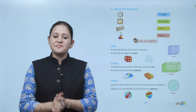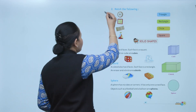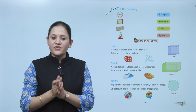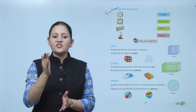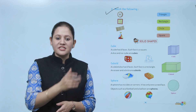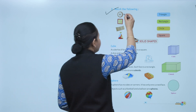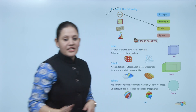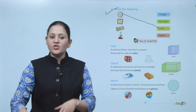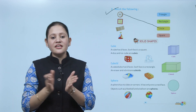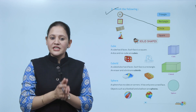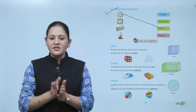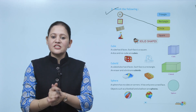Next is match the following. First is a wheel — it is of circle shape, so we will match it to circle like this. You will identify the object, determine its shape, and accordingly match it with the given shapes.